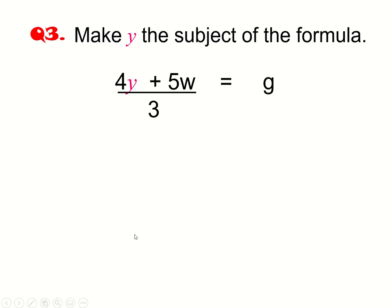For example three, a bit more going on. We're making something over here the subject. In this case is y. So we've got 4y plus 5w over 3 equals g. We want to rearrange it just to get y. So again, we'll rewrite out the formula. And we're going to take the 3 across the equal sign. It was underneath, under here, was divide by, again, under this imaginary multiplication line.